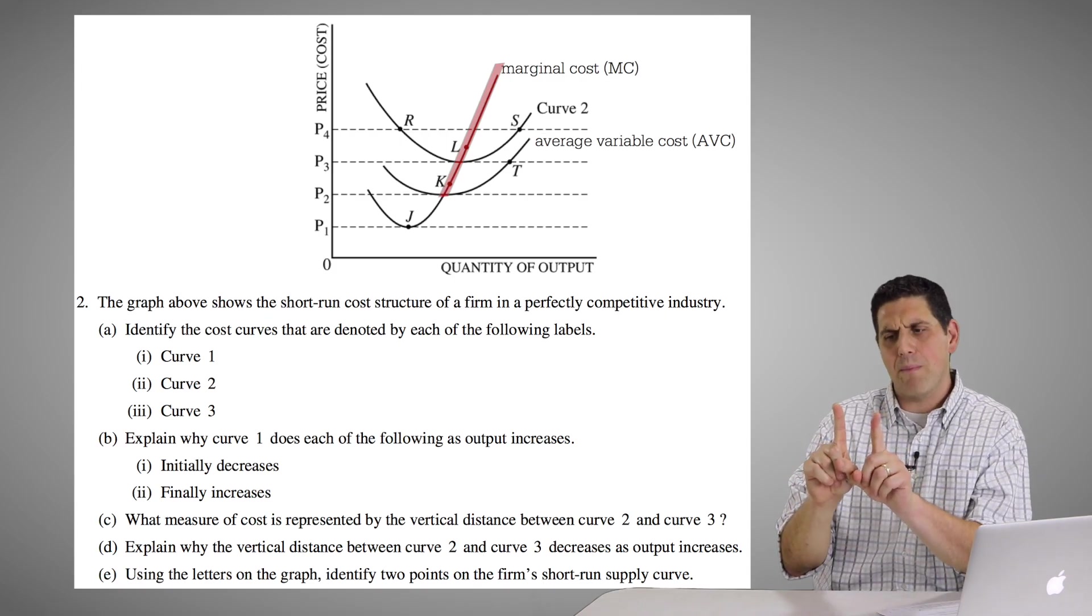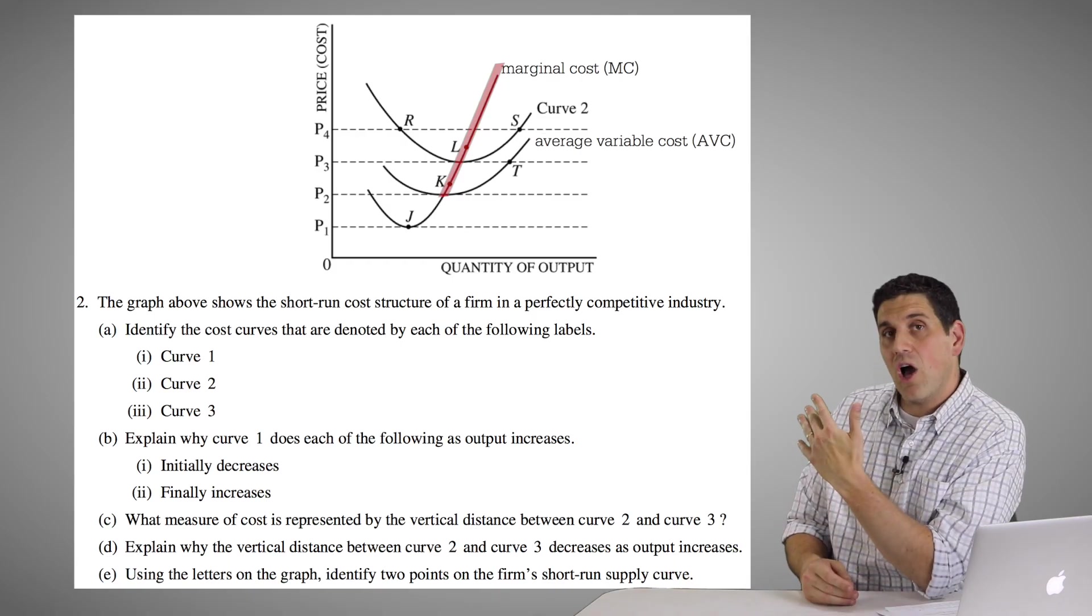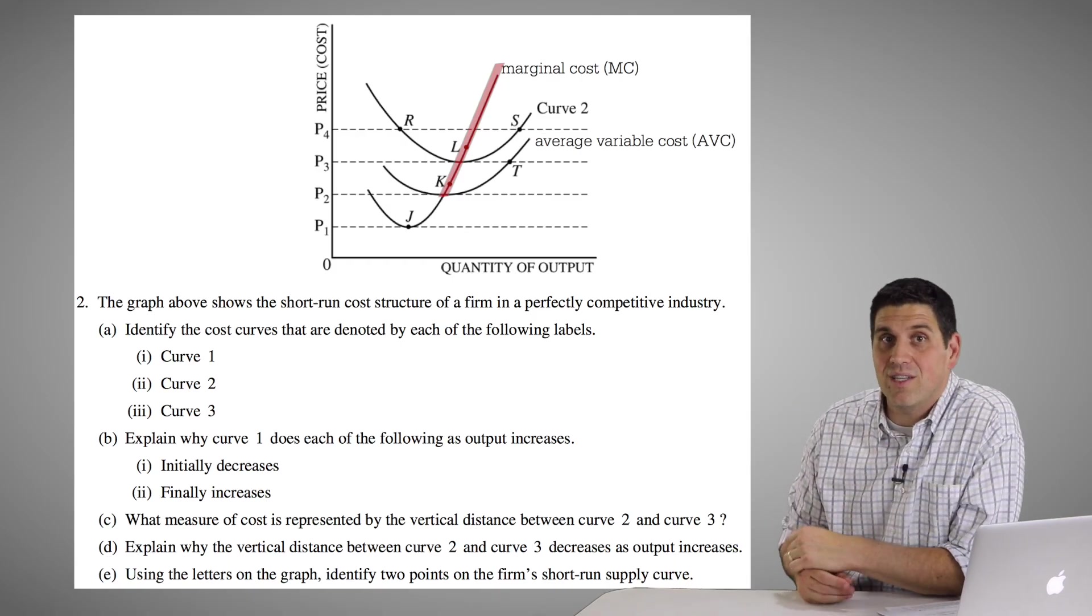And so the price is the MR. If it's perfect competition, the price goes up, the quantity goes up, the amount that they're making goes up. That's the law of supply. That's the idea.